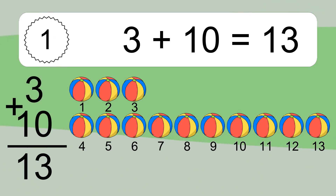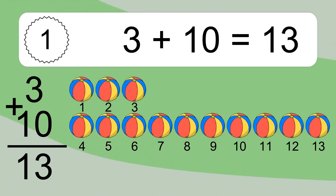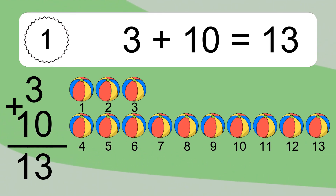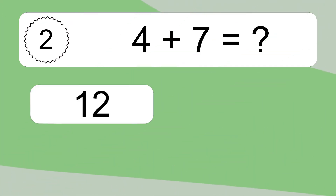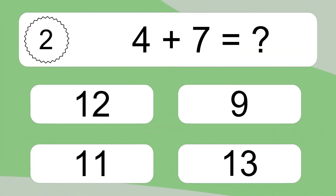Let's count it. 1, 2, 3, 4, 5, 6, 7, 8, 9, 10, 11, 12, 13. 4 plus 7 equals what?